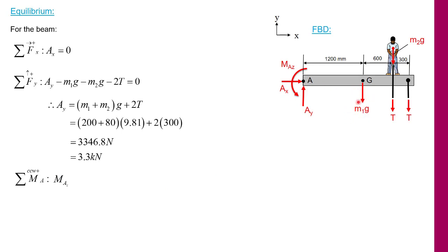So my first moment will be Maz which is in the counterclockwise, thus positive in my equilibrium equation. If I go along the beam, the next force I encounter is m1 times g and it will have a moment arm of 1200 millimeters and it will cause a clockwise or negative moment. I've transformed the 1200 millimeters into meters to keep everything in base units so that my mass times gravity times meters will give me newton meters.